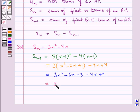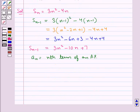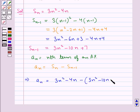Further we get 3n² - 10n + 7. This is S_(n-1). So if we take A_n to be the nth term of an AP, this nth term is equal to...